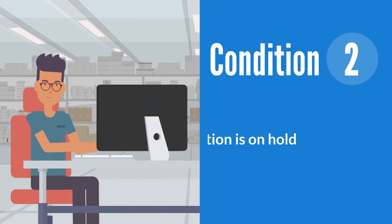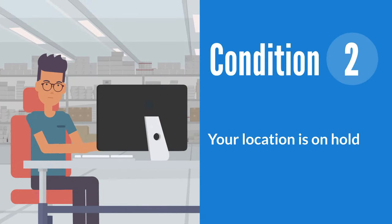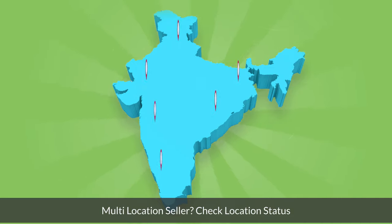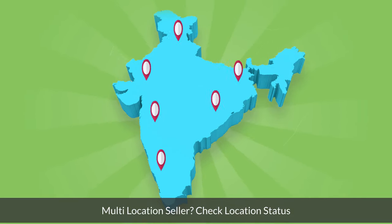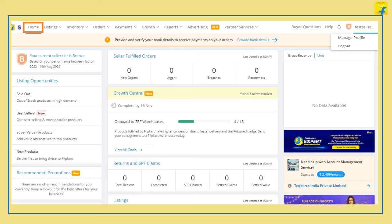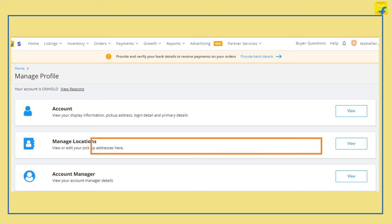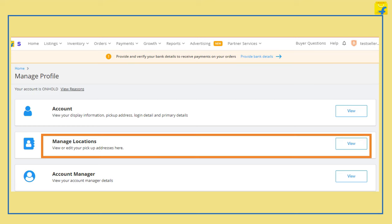Another reason why your product may not be visible on the website is when your location is on hold. If you are a multi-location seller, you can check the reasons for the same by following these steps: Go to the Home tab in your seller portal, click on Manage Profile, click on the Manage Location option, and check the status.